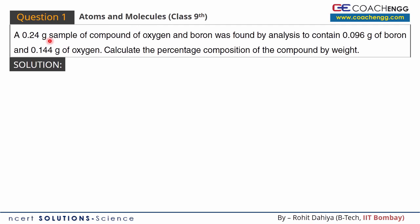A 0.24 gram sample of a compound of oxygen and boron was found by analysis to contain 0.096 grams of boron. This compound was made of oxygen and boron.